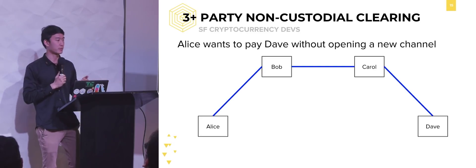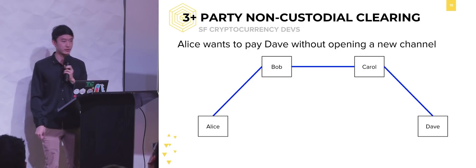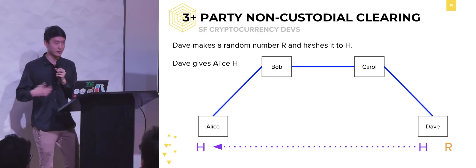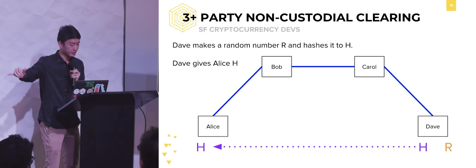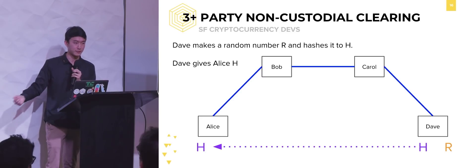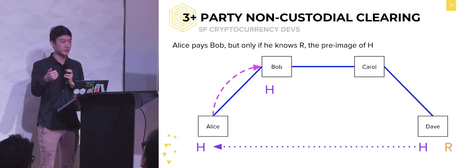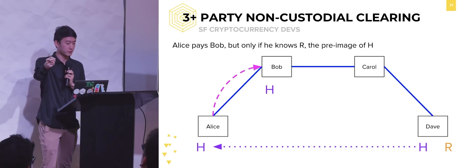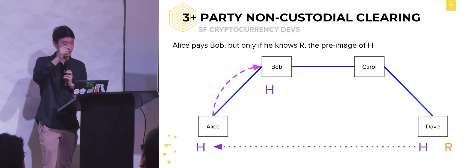Let's say Alice has a payment channel open with Bob, Bob has one open with Carol, and Carol has one with Dave. Alice wants to pay Dave without opening a new channel or creating an on-chain transaction. Dave generates a random number R, runs it through the hash function to produce hash output H, and gives H to Alice. Alice writes a transaction with these semantics: 'Bob, I will pay you, but only if you know R — the pre-image of H.' At this point, Alice doesn't know R; she only knows H. So she creates this transaction: 'I'll pay you if you know R, but if you can't produce R within three days, I get my money back.'